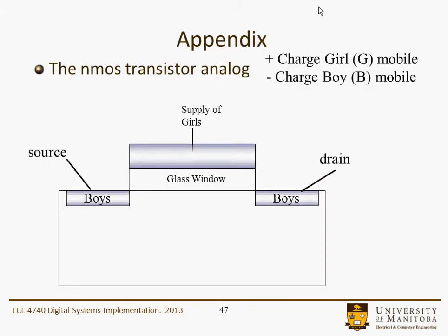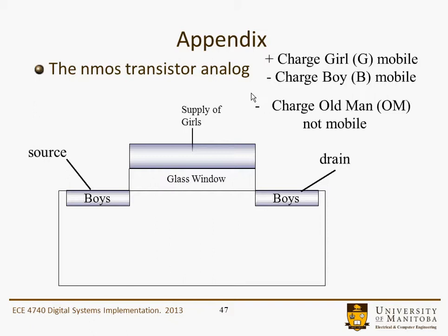This is a bit of an appendix that demonstrates how an NMOS transistor works. It's perhaps not physics, but perhaps more sociology. In this analogy, we have positive charges which are girls and they're mobile, we have negative charges and they're boys and they're mobile, and you also have some negative old man charges and they're not mobile. The situation initially starts off with some mobile girls and old men in the bulk, and there's a glass window here. There's some supply of girls here, and there's a source and a drain, just like an NMOS transistor.